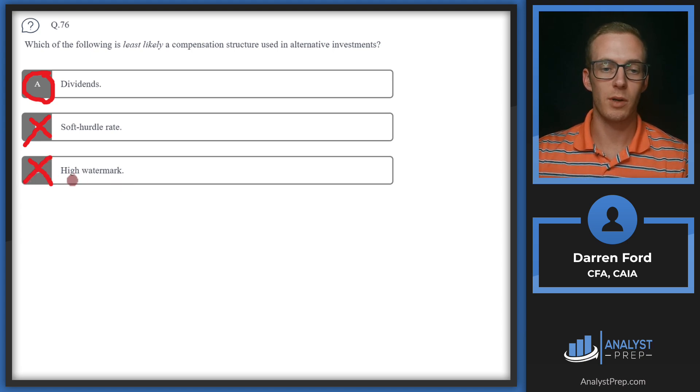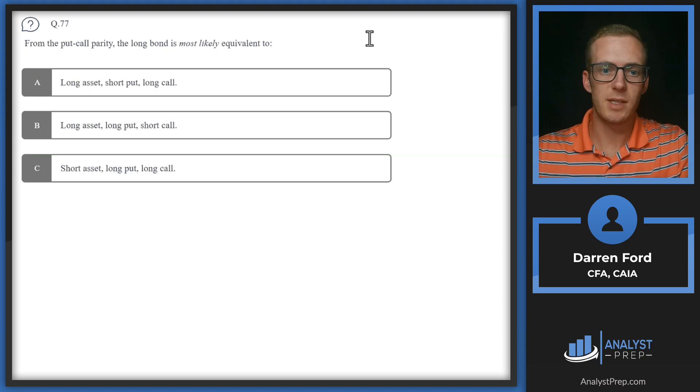C: High watermark. This is also a compensation structure used. This is most important when a manager's had a poor year and maybe their returns were negative. If they had $100 at their peak and now the fund is down to $80, they would need to get their performance back up above $100 in order to start collecting or looking at different incentive fees. So we'll go with A: dividends.